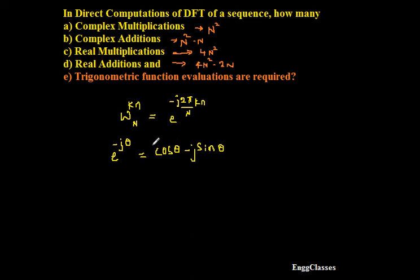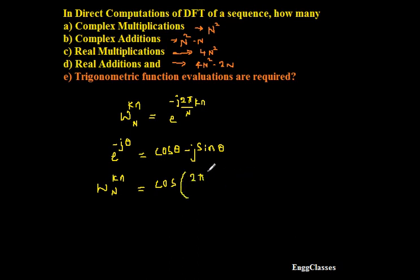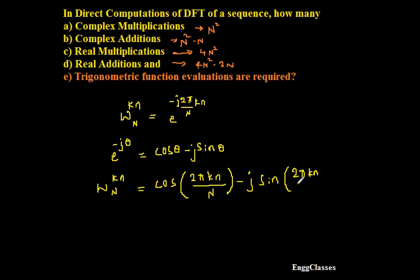Using Euler's rule, we can write W_N to the power kn as a cosine minus j sine term. The real part is cosine of 2πkn divided by N, and in place of θ we have 2πkn divided by capital N. The imaginary part is minus j sine of 2πkn divided by capital N.